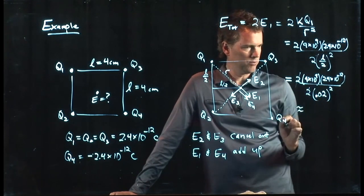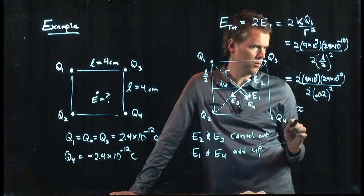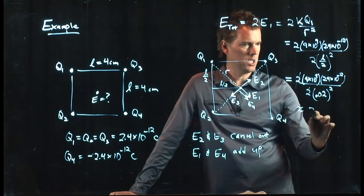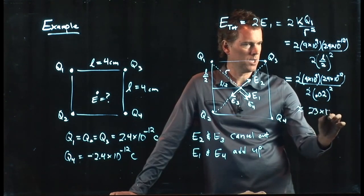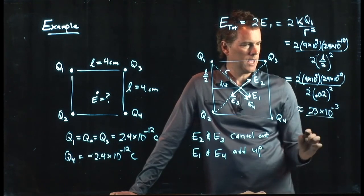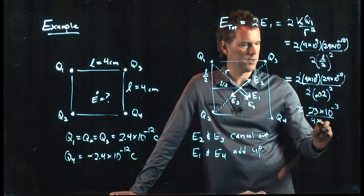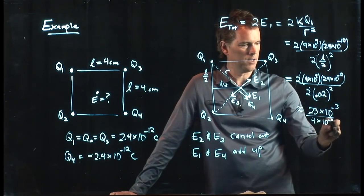9 times 2.4 is 18—23-ish—23 times 10 to the minus 3. And then we've got a 2 times 10 to the minus 2 squared, which is 4 times 10 to the minus 4.